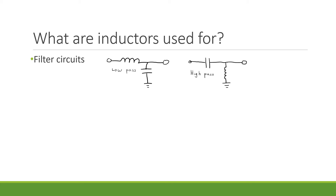This is a high-pass filter. High frequency signals get through this filter, but low frequency signals are blocked out. If a low frequency signal is attached on the left-hand side, it goes through the capacitor but also goes through the inductor and goes to ground. So low frequency signals go to ground in a high-pass filter, whereas high frequency signals can't go through the inductor to ground, so they go to the output instead. High frequency signals go through, but low frequency signals are absorbed by ground.